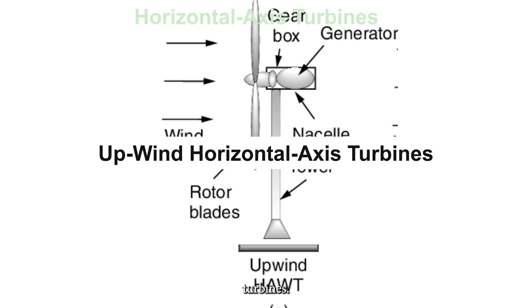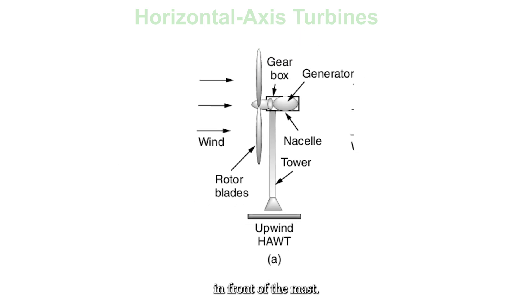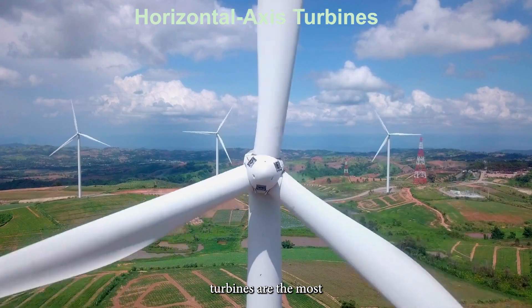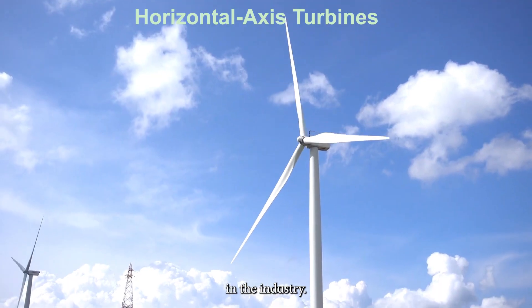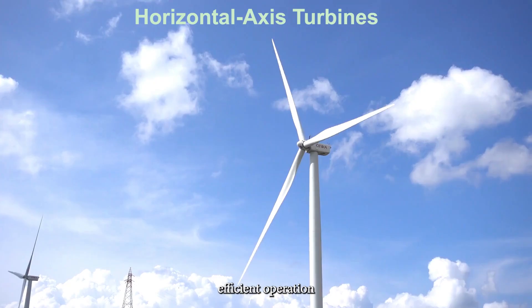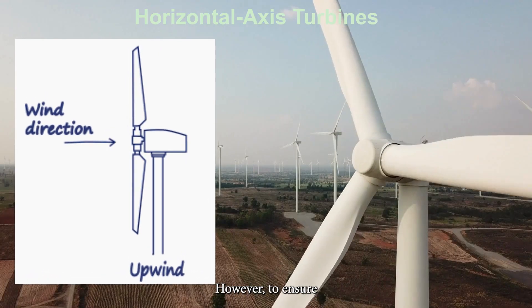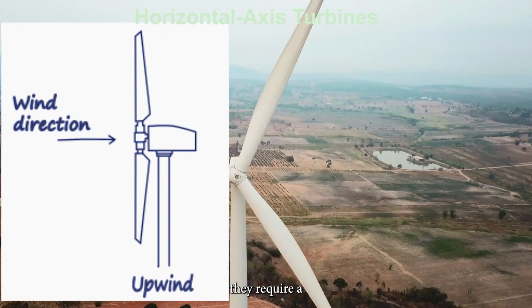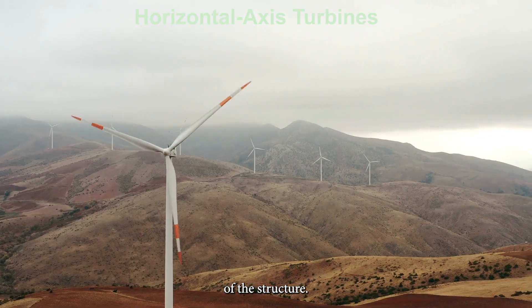Let's start with upwind horizontal axis turbines. These turbines face the wind, with the rotor blades in front of the mast. Upwind horizontal axis turbines are the most commonly used wind turbines in the industry. They offer efficient operation and are less susceptible to wear and tear. However, to ensure proper alignment with the wind, they require a yawing mechanism, which adds to the overall weight of the structure.